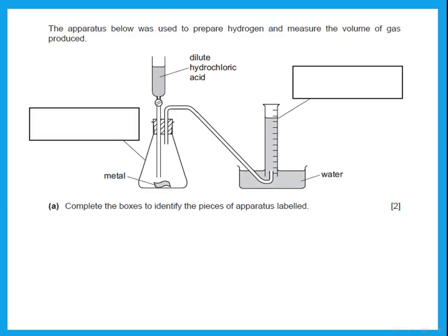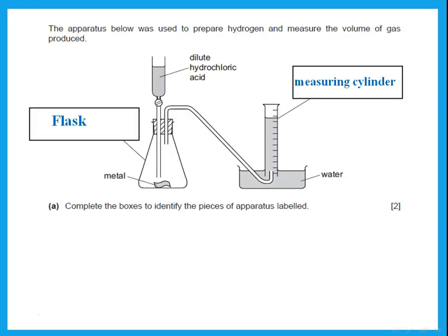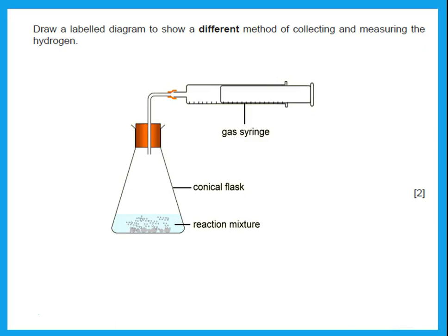The apparatus was used to prepare hydrogen and measure the volume of gas produced. The first apparatus on the left is a flask. The container with graduations is a measuring cylinder; without graduations, it would be a gas jar. To collect gas using a different method and measure its volume, use a gas syringe. Draw a labelled diagram showing the gas syringe connected to the flask — don't forget to label.